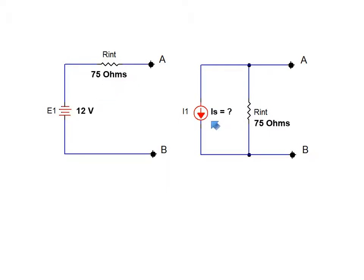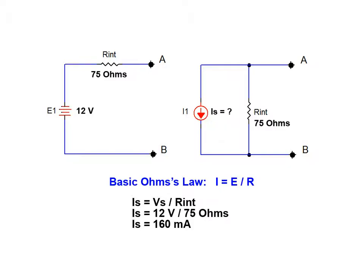We move on to calculate the current source value by applying basic Ohm's law. The appropriate current source value is arrived at by dividing the voltage by the internal resistance. We find that the appropriate current source value is 160 milliamps.